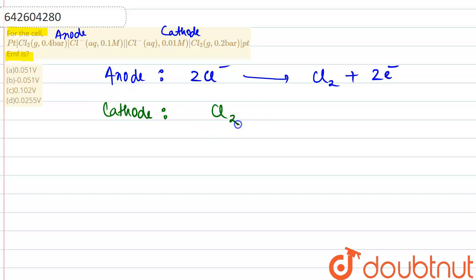If we talk about the cathode, then there is gain of electron reduction. Chlorine would be gaining two electrons and will be releasing two chloride ions. So the overall net reaction of the cell becomes two chloride ions reacting with chlorine and giving two chloride ions in chlorine.